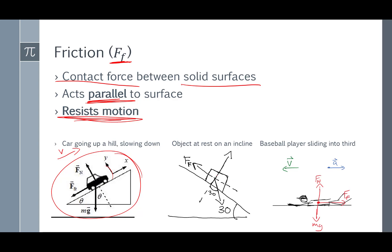For an object at rest on an incline, we have a downward force of gravity, I should label that mg. We have an upward normal force. And friction is actually pushing along the slope, up along the slope, to hold the object up.